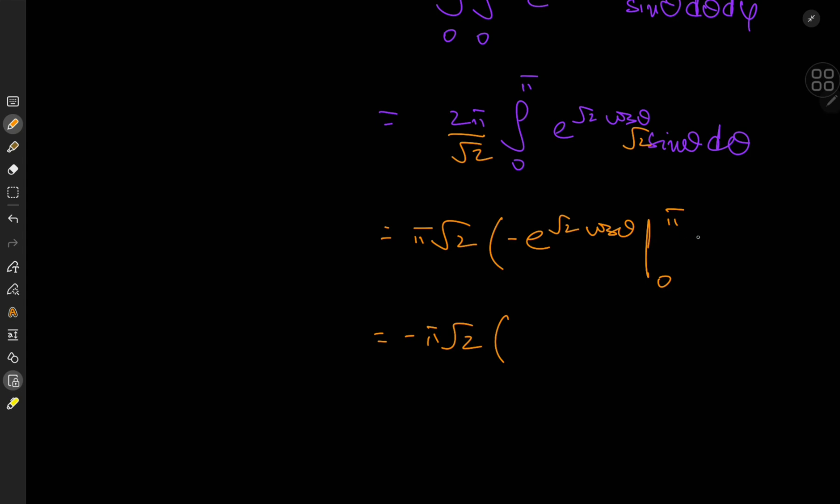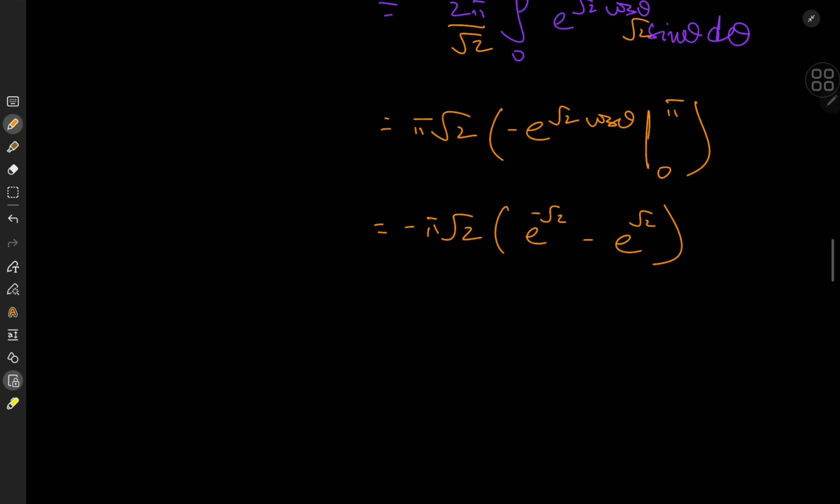and then I have e to the root 2 times negative 1, minus as theta approaches 0 we get positive 1, so that's e to the root 2.